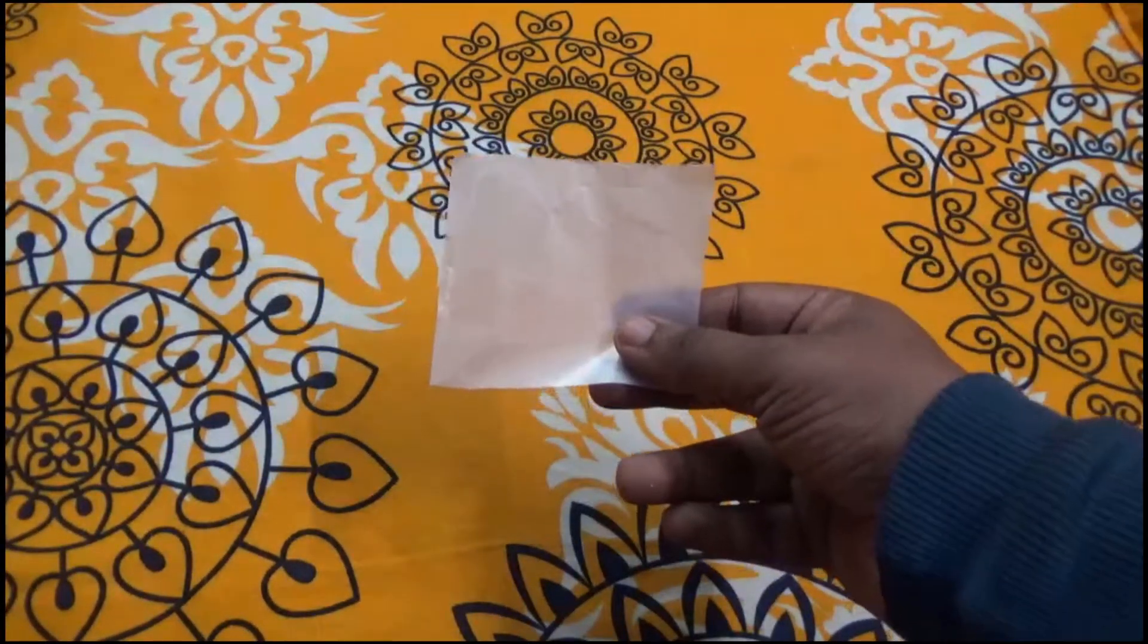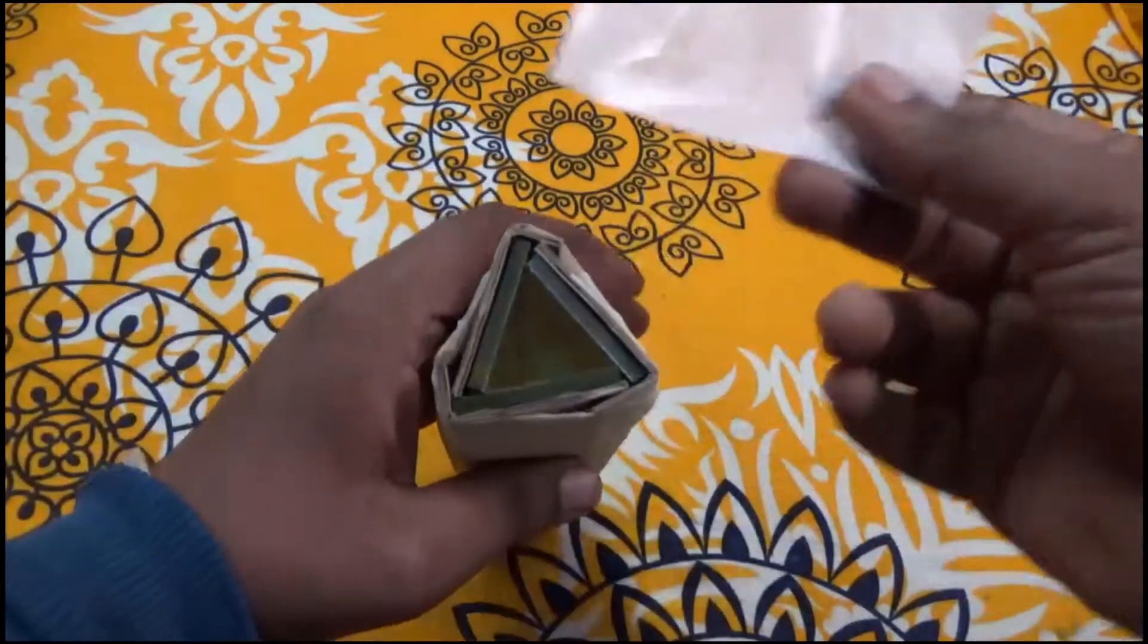After that we are going to take a small piece of butter paper and paste it on one end of the kaleidoscope.